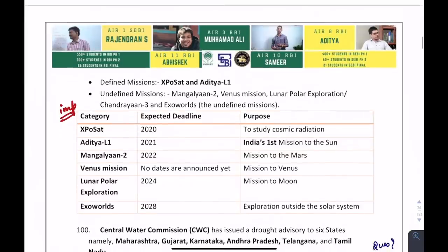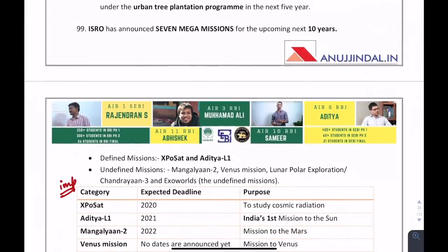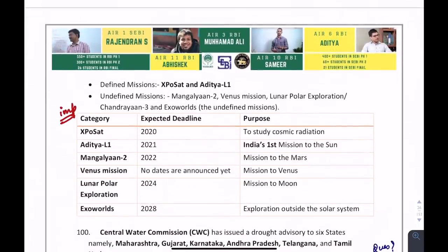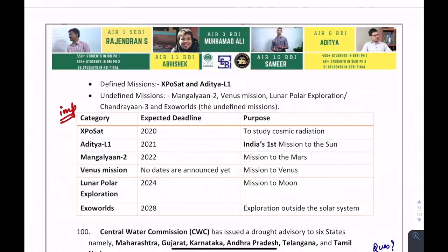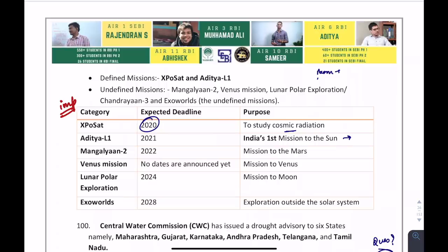Regarding ISRO's upcoming missions: XPoSat has an expected deadline of 2020 and will study cosmic radiations. Aditya-L1 is India's first mission to the Sun. Another mission to Mars is Mangalyaan, and a Venus mission has no announced date yet — it is an undefined mission.